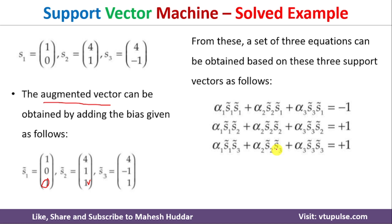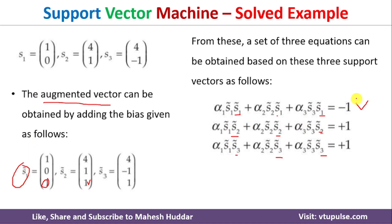With the augmented vectors, we set up three equations. The first equation is: α1·(S1·S1) + α2·(S2·S1) + α3·(S3·S1) = -1, because S1-bar is a support vector for the negative class. The second equation uses S2 as common: α1·(S1·S2) + α2·(S2·S2) + α3·(S3·S2) = +1. The third equation similarly uses S3, equal to +1.